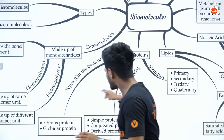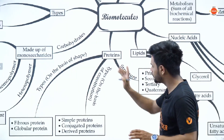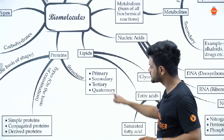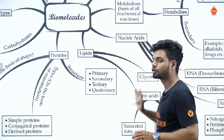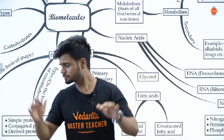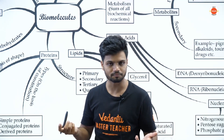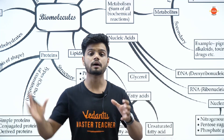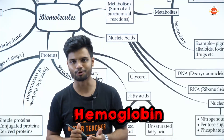Now we have proteins. The main thing to remember is the structure of protein: primary structure, secondary structure, tertiary structure, and quaternary structure. Primary structure is linear. Secondary structure includes alpha helices and beta pleated sheets. Tertiary and quaternary structures are made up of many different chains — for example, hemoglobin.